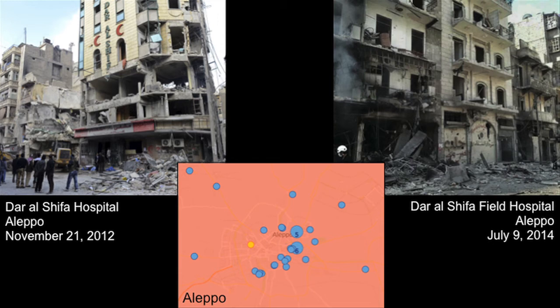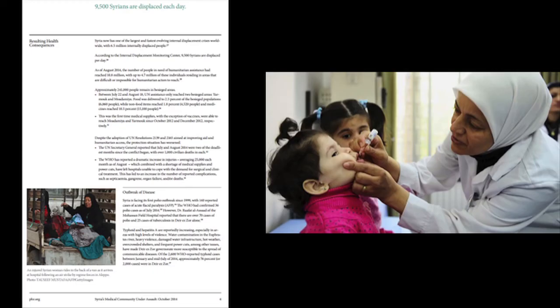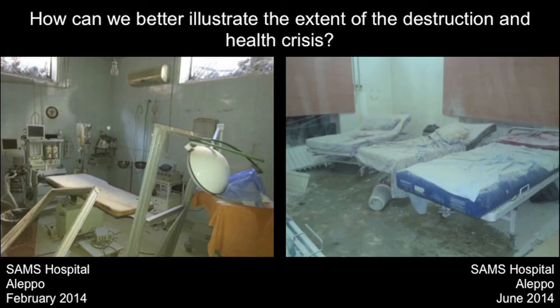Another issue is how to make the map more than just points and colors. When you look at Aleppo, you see all the attacks, but until you open the info windows and see photos of the hospitals that have been destroyed, you don't understand what's actually happening on the ground. Similarly, if you open our fact sheet, you can read about how Syria is facing its first polio outbreak since 1999 and outbreaks of leishmaniasis and measles — but unless you go to that link, you don't have the information. How can we better illustrate the extent of the destruction and the health crisis without making viewers dig through extra links?